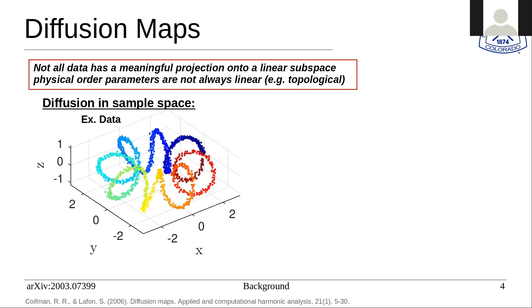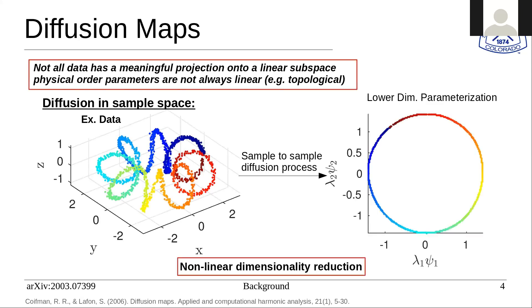We'll talk about non-linear dimensionality reduction. In particular, we found that diffusion maps can be very versatile and useful. The diffusion map is diffusion in sample space. For example, if you have this data set here, you can do a lower dimensional parameterization onto this circle and as you can see this is a non-linear dimensionality reduction. It uses a non-linear manifold to project onto.